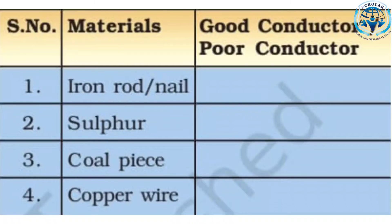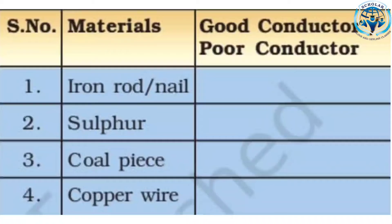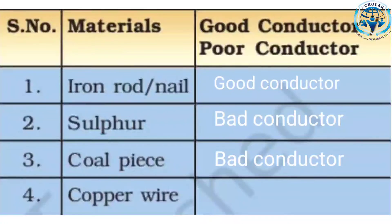You are familiar with the fact that metals are good conductors of electricity while non-metals are poor conductors of heat and electricity. An iron rod or iron nail is a good conductor of electricity because iron is a metal. Sulfur and coal are non-metals, so they are poor conductors. Copper wire — since copper is a metal and a good conductor of electricity — is used to make wires.